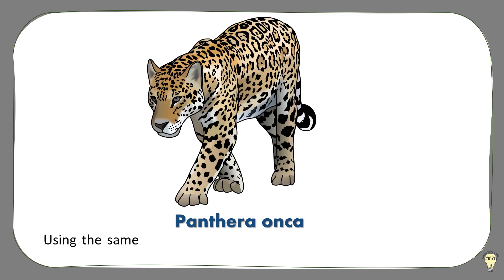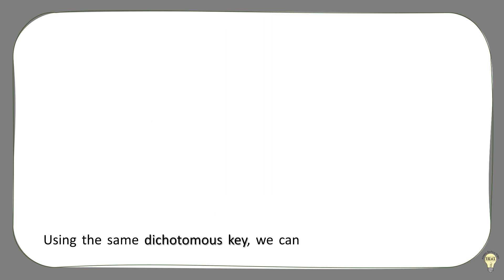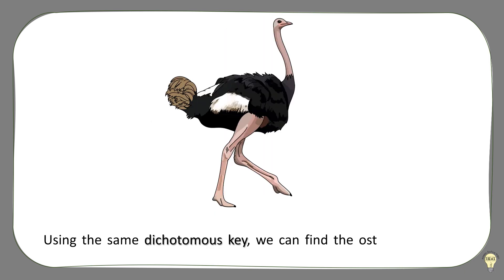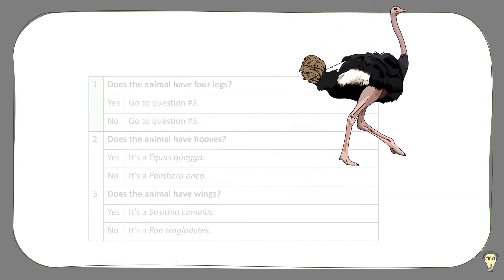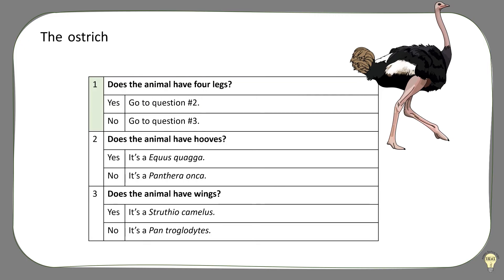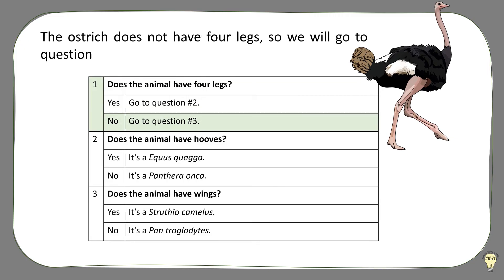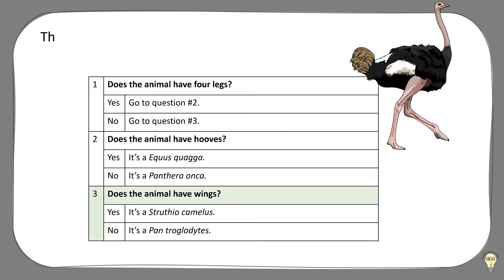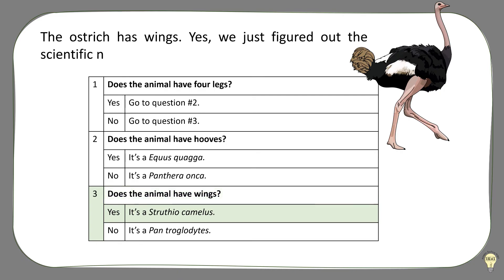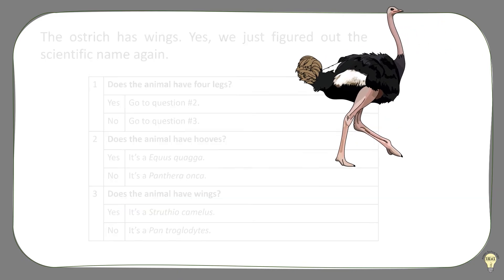Using the same dichotomous key, we can find the ostrich's scientific name starting at number 1. The ostrich does not have 4 legs, so we will go to question number 3. The ostrich has wings. Yes, we just figured out the scientific name again.